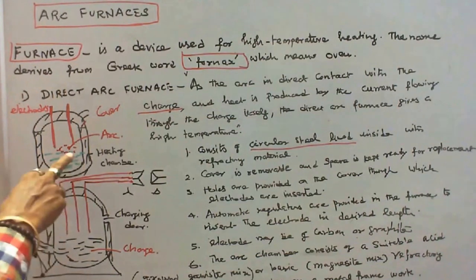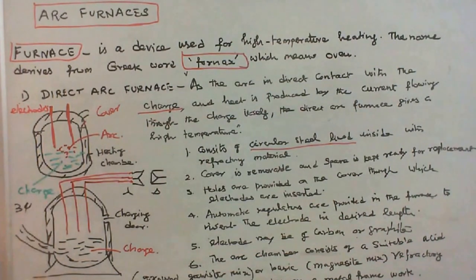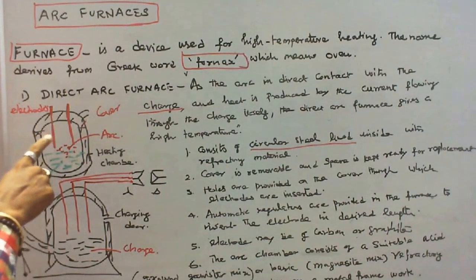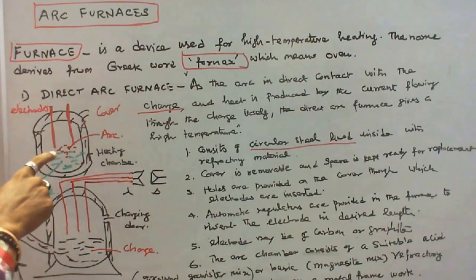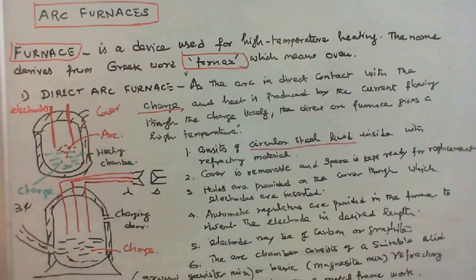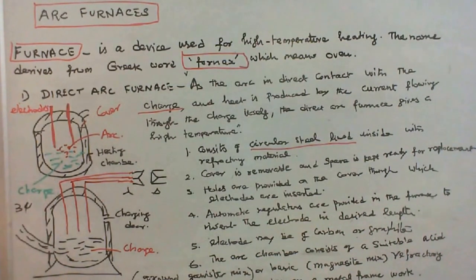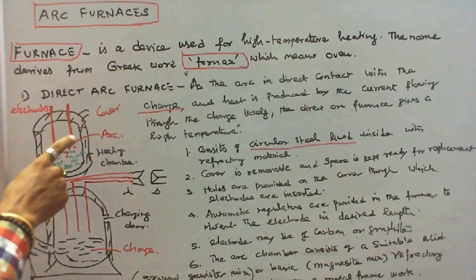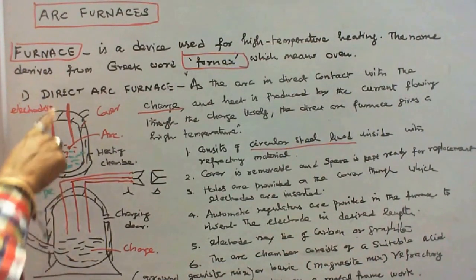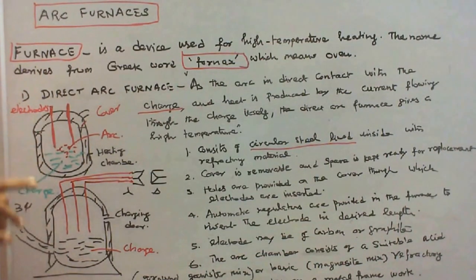The direct arc furnace gives high temperature. The direct arc furnace consists of circular steel lined inside with the refractory material. The top cover or roof is removable and spare is kept ready for replacement. Holes are provided on the cover through which the electrodes are inserted.